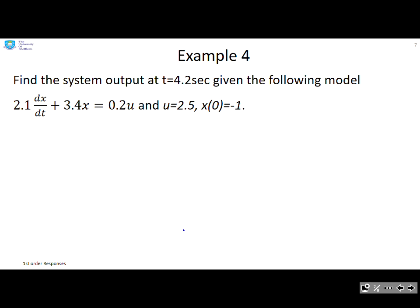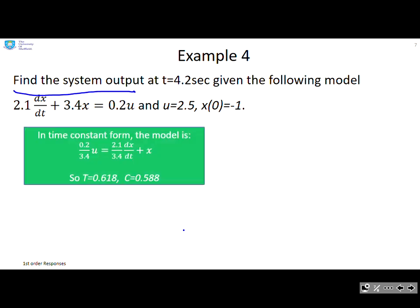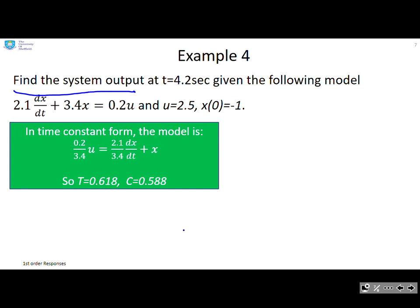Example 4. Find the system output at t equals 4.2 seconds given the following model: 2.1 dx/dt plus 3.4x equals 0.2u, with u equals 2.5 and x(0) equals minus 1. The model is not in time constant form. First thing I do is put the model into time constant form by dividing through by 3.4. I've identified that the time constant is 0.618 and capital C is 0.588.